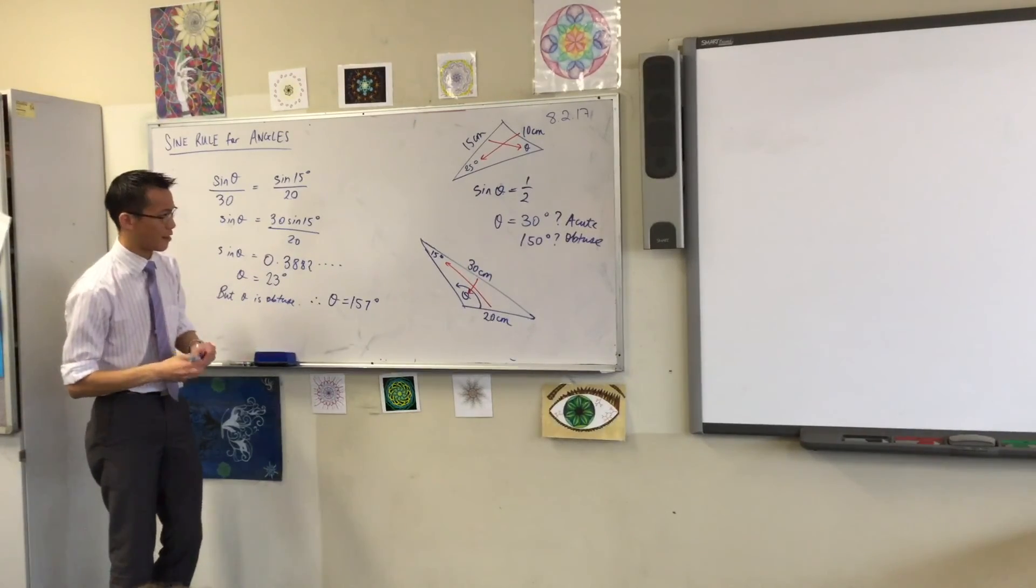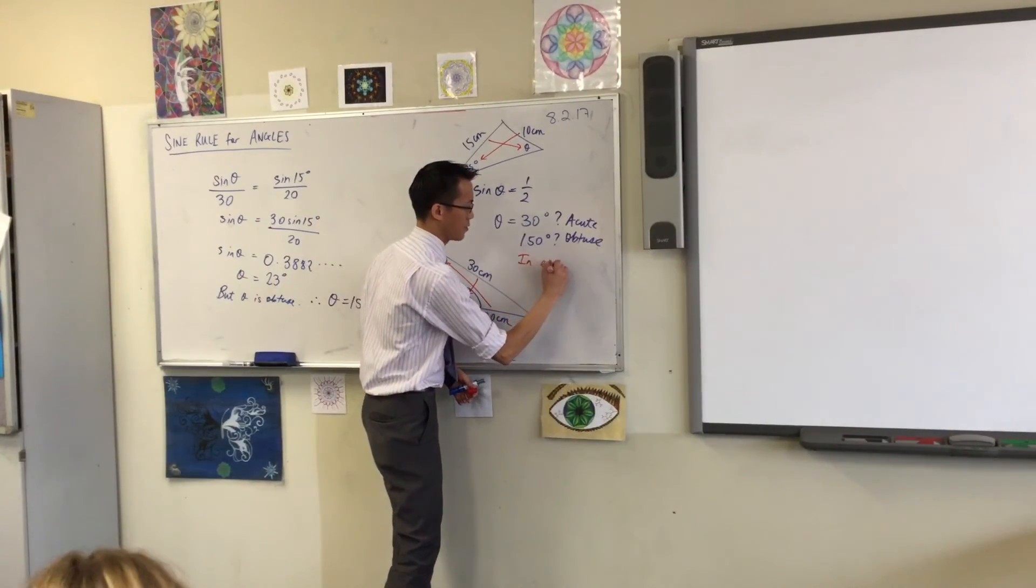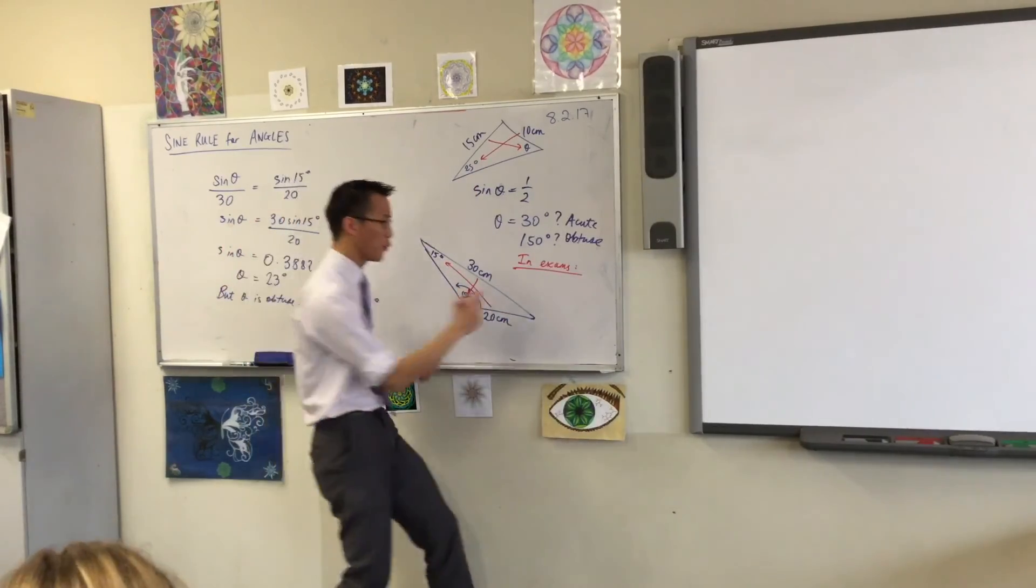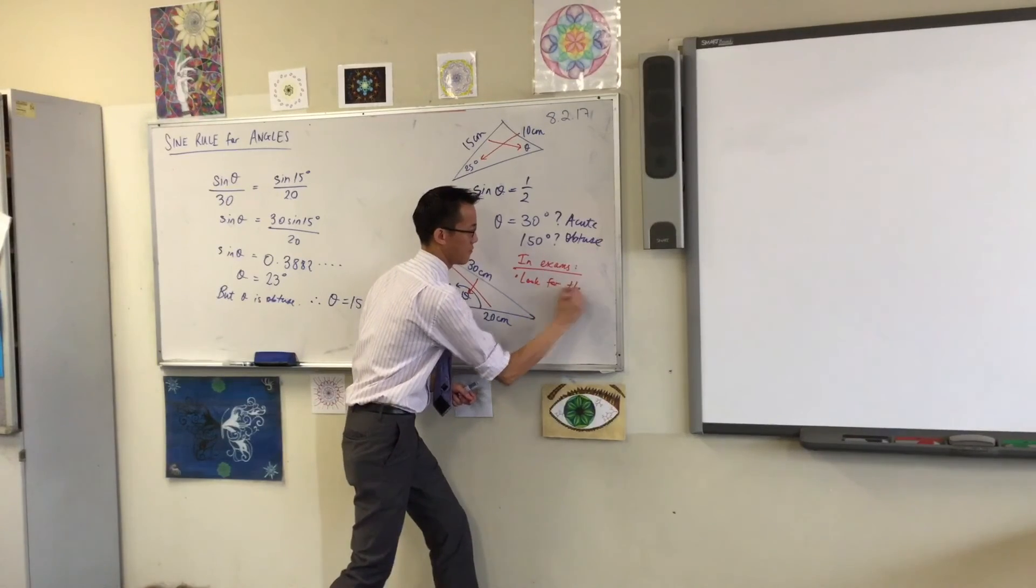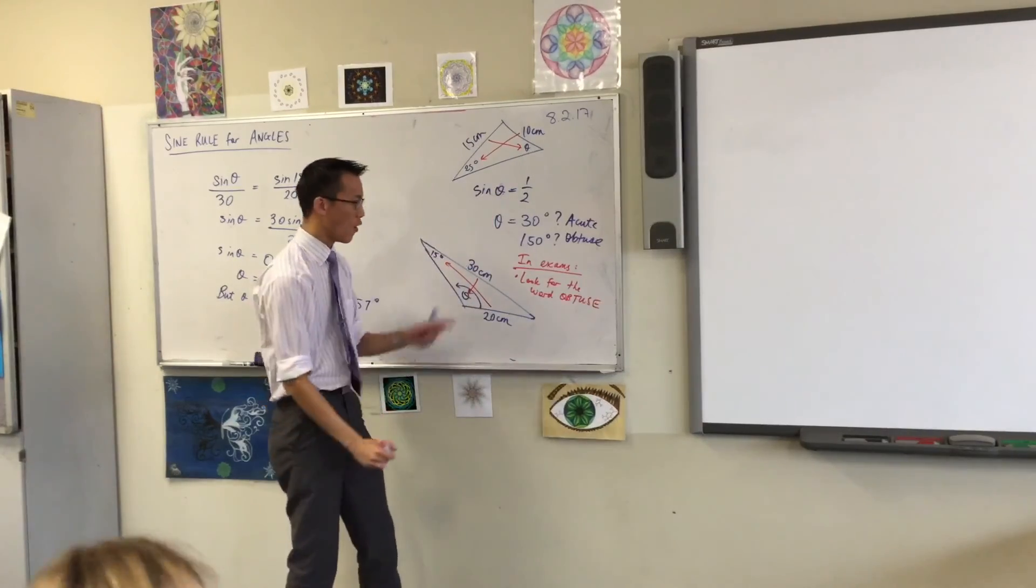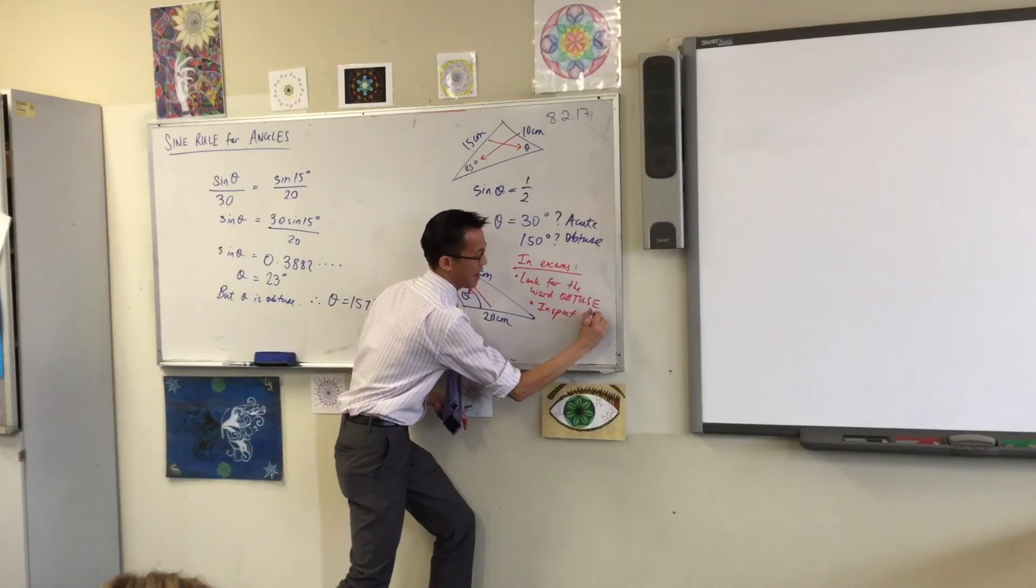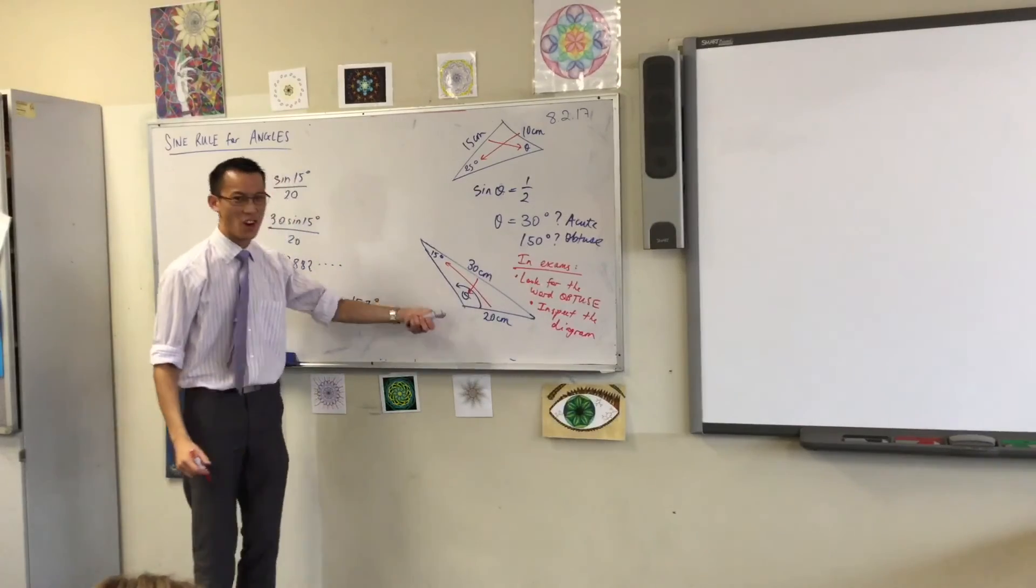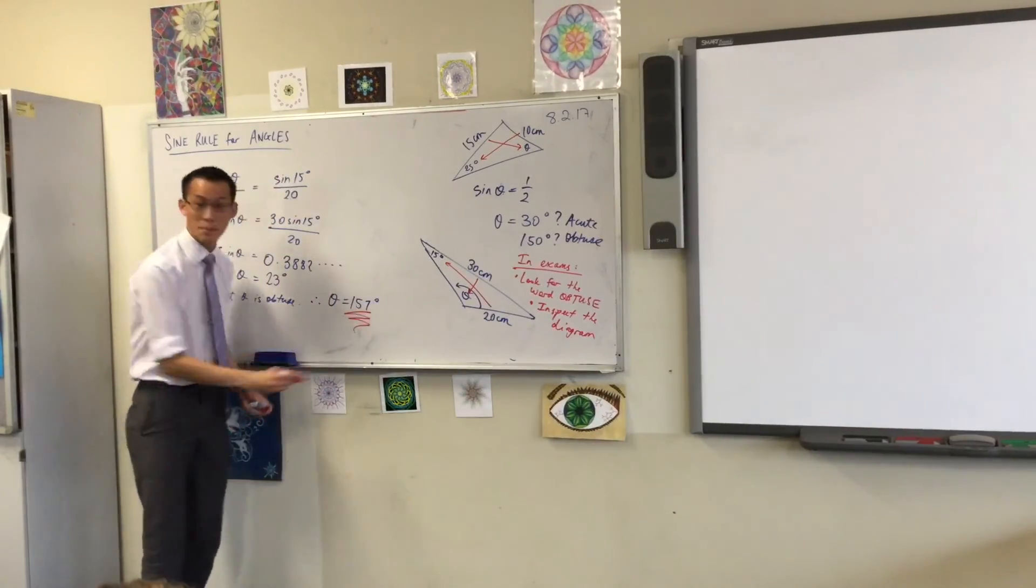So, again, a bit of a reminder. And maybe you want to put this right next to your diagram. In assessments, in exams, either read—look for the word obtuse. If they want you to find that angle, they'll tell you. Or, look at the diagram.